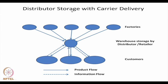The fourth option is distributor storage with carrier delivery. The distributor has the storage facility and a warehouse where the product is stored. As orders come in, the orders are filled by shipping the materials through small packet carriers to the customers. The different factories of the manufacturer produce different components, which are supplied to the distributor's warehouse, and from there the supply is made.